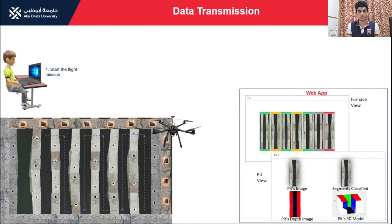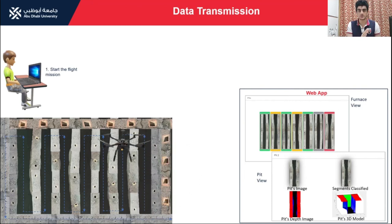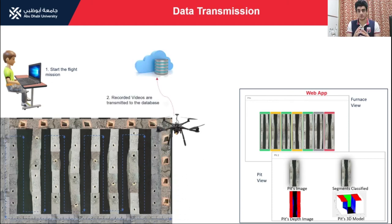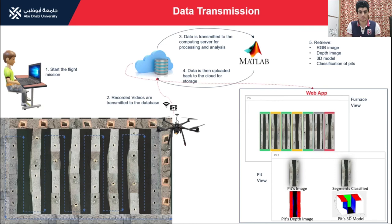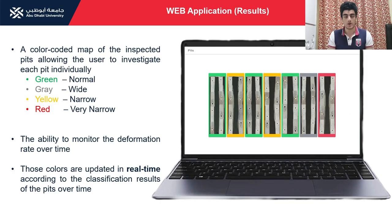For data transmission: the user starts the drone's mission, the drone records video of all the pits, and uploads that video to Firebase storage. A MATLAB script then retrieves the video, mosaics it, and supplies it to our AI system to detect pits and classify each pit accordingly. All results and pictures are uploaded back to Firebase, and finally the web application retrieves the results and displays them to the end user.